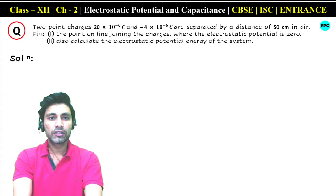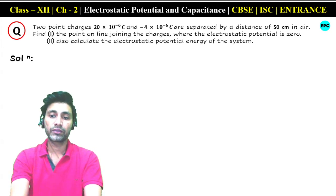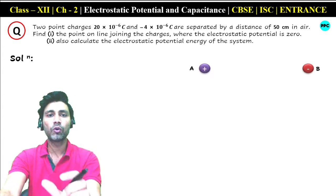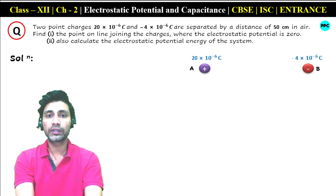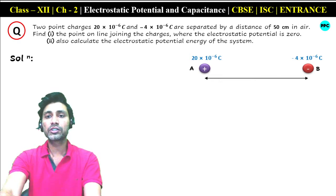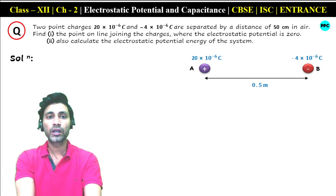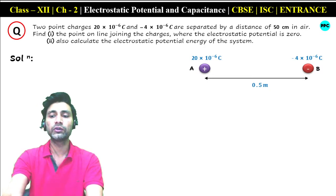Second part: also calculate the electrostatic potential energy of the system. Students, here are 2 point charges — one is 20×10⁻⁶ coulomb and the other is minus 4×10⁻⁶ coulomb. Both are separated by 50 cm, i.e., 0.5 meter. So we have to find the point on the line joining both charges.